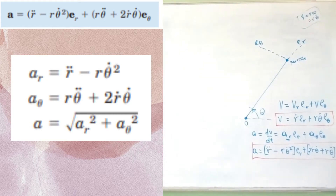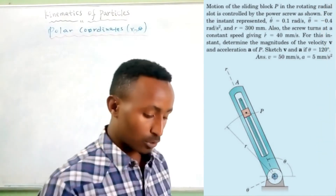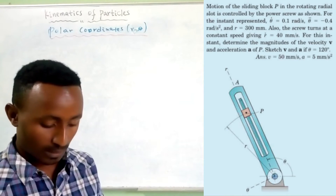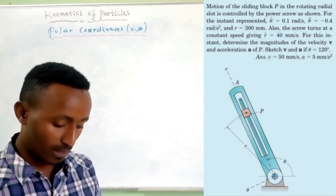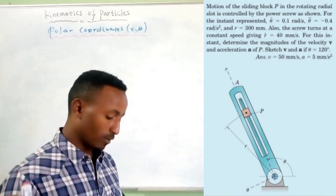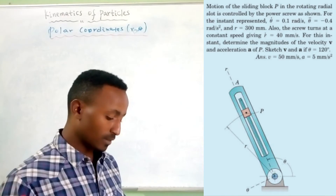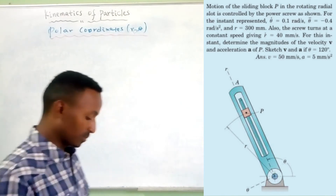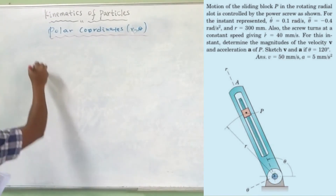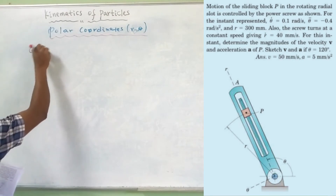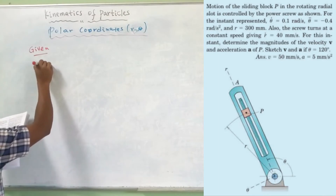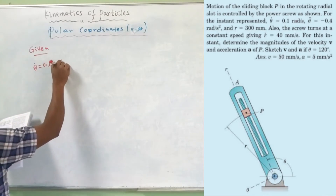Polar coordinate example: The motion of a sliding block P in a rotating radial slot is controlled by a power screw, as shown in the figure. For the instant represented, the point P is given, and r at zero represents the position.